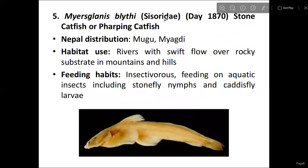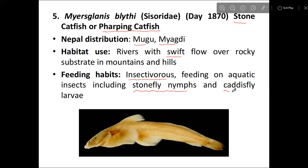The next species is Mirsglannis blythi, from the family Sisoridae, also known as the stone catfish or Farping catfish. Its distribution in Nepal includes Mugu district and Magdi district. Its habitat is swift-flowing water over rocky substrate in mountains and hills. Its feeding habit is primarily insectivorous, feeding mainly on aquatic insects — specifically caddisfly larvae and other aquatic insect larvae.